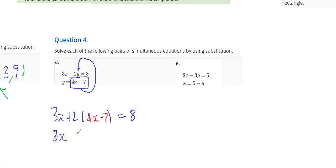So, I've got 3x plus 2 times 4x is 8x. 2 times minus 7 is minus 14, equals 8.